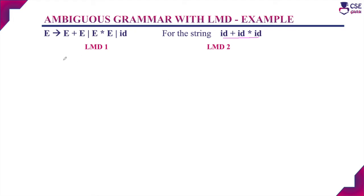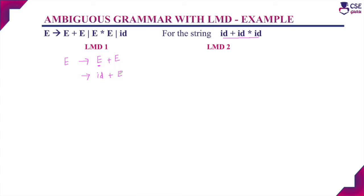For the first leftmost derivation, we apply the production E → E + E. Choose the leftmost non-terminal and apply the production rule. For this non-terminal E, we apply E → id. Next, only one non-terminal remains, so for this non-terminal E, we apply E → E * E.